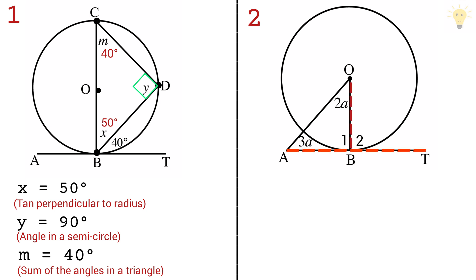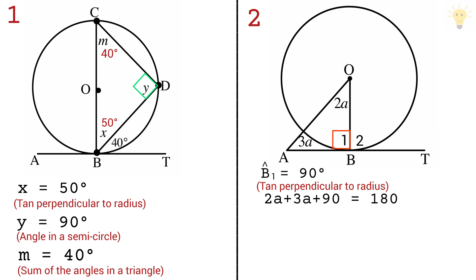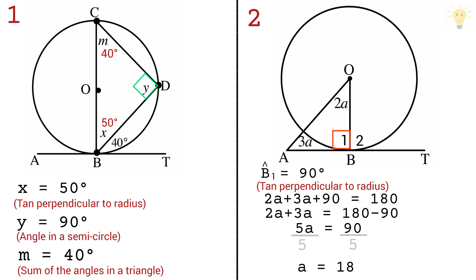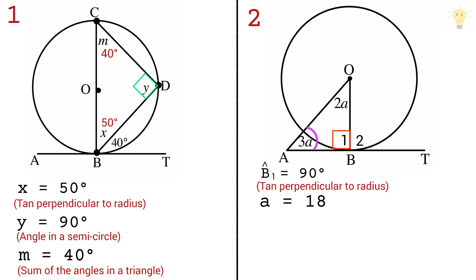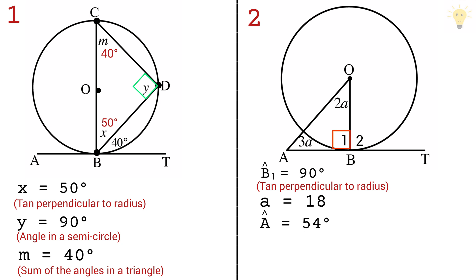This line is drawn perpendicular to the radius, so it is a tangent making a 90 degree angle at the point of contact. Using the triangle angle sum: 2a plus 3a plus 90 equals 180. Taking 90 to the other side gives 5a equals 90, so a equals 18. The size of angle 3a is 3 times 18 equals 54 degrees, and 2a is 2 times 18 equals 36 degrees.